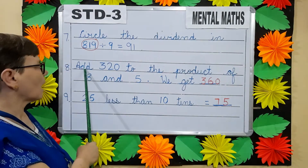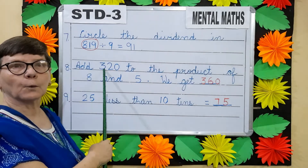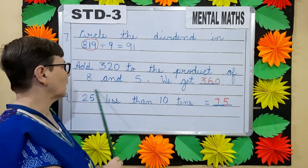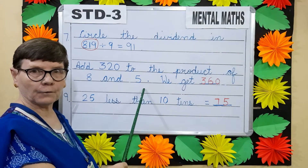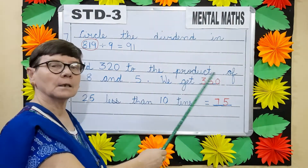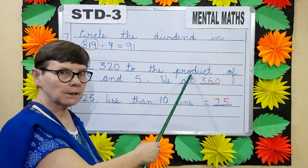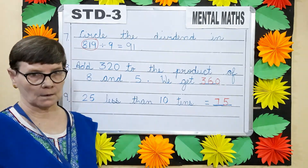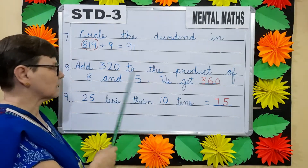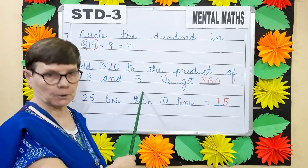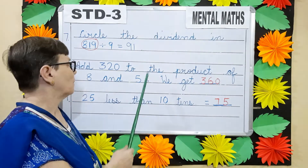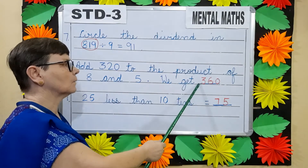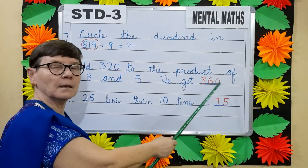Next: Add 320 to the product of 8 and 5. We get dash. Product here means multiplying 2 numbers. So 8 fives are 40, plus 320 will give you 360.